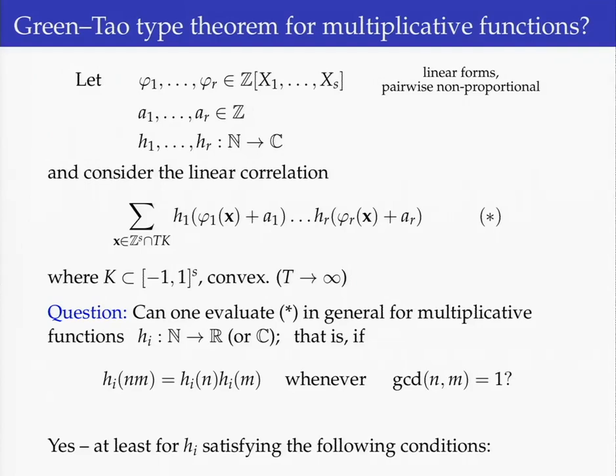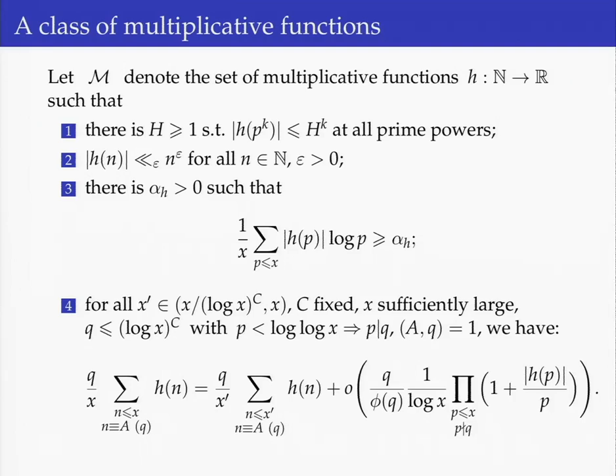The class is what I will describe next. We consider the set of multiplicative functions satisfying four conditions. The first condition is that for each function there should be a constant H that is at least 1, such that the functions are uniformly bounded along prime powers in a specific way. The second condition says these functions have a divisor function-like growth behavior.